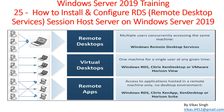Hi friends, welcome to my channel. This is Windows Server 2019 training tutorial, video number 25 in this series. Today I am going to show you how to install and configure RDS - Microsoft Remote Desktop Services - and host server deployment on Windows Server 2019. In the last video we did a quick installation using Microsoft RDS quick installation and successfully installed all the roles on one server. Now I am going to install Remote Desktop Services on two different servers.